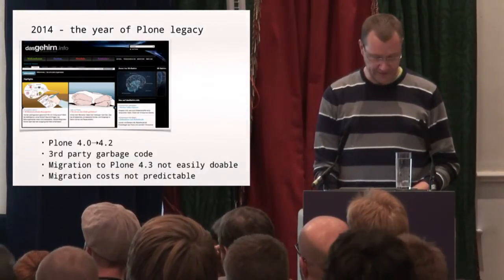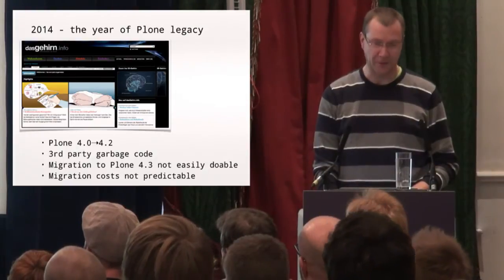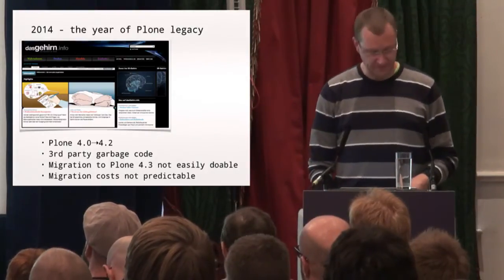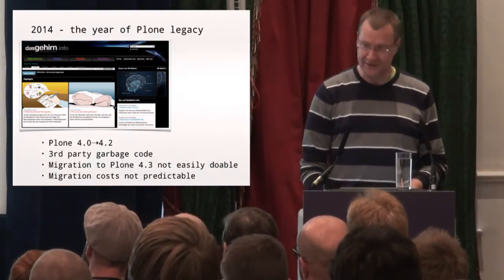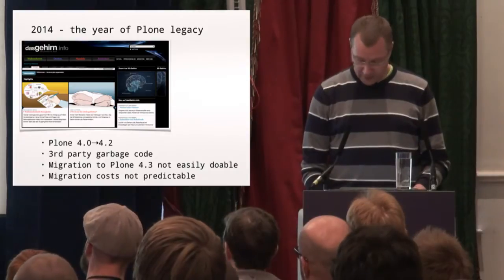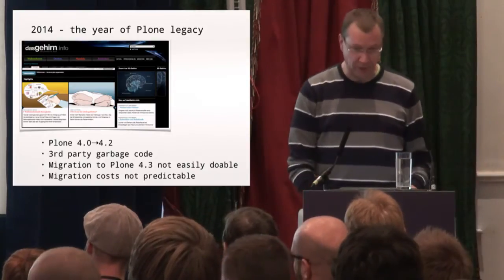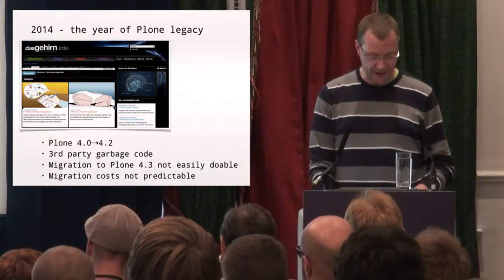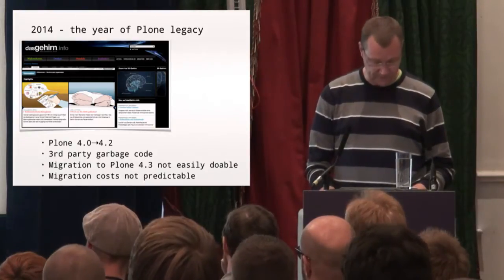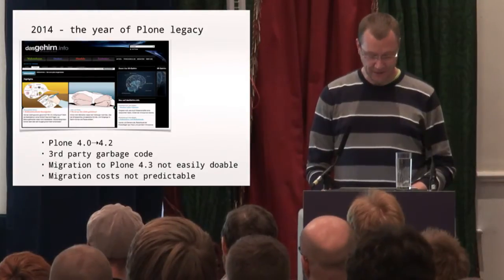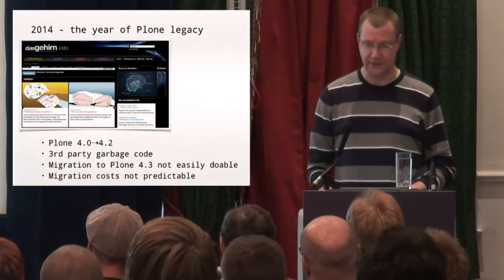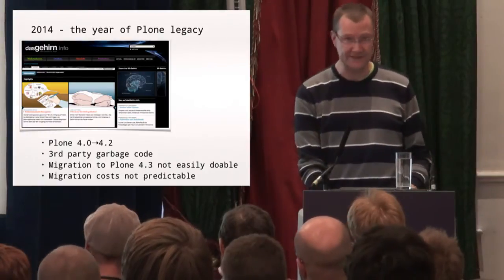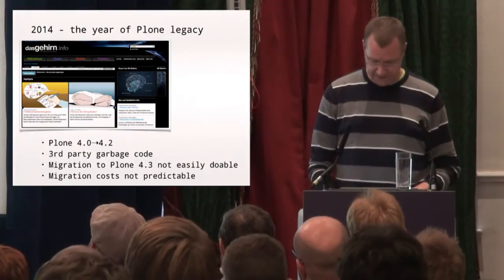We took over a project at the beginning of the year from a company that didn't know about Plone and had produced a huge website with about 40 different portal types. We did a migration from 4.0 to 4.2, with lots of third-party garbage code that we could throw away. We got migration to 4.1 and 4.2 running pretty fast, but then we tried to go to 4.3 and ran into trouble. So we're currently on 4.2, and we couldn't even give the customer an estimate for what the migration from 4.2 to 4.3 would cost.